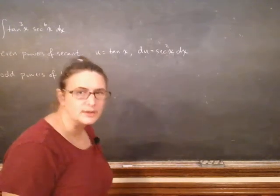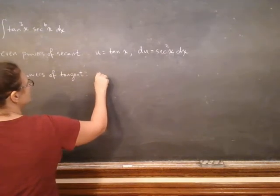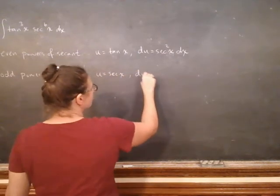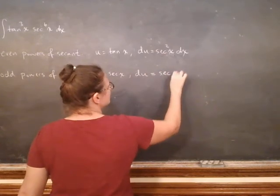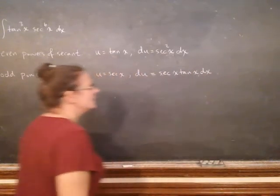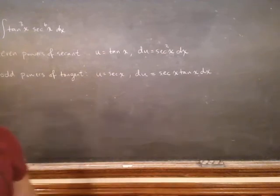then you want to do u equals secant because what you want to do is pull off one of your tangents to be part of your du, then you have an even bunch of tangents and you can change them all to secant.